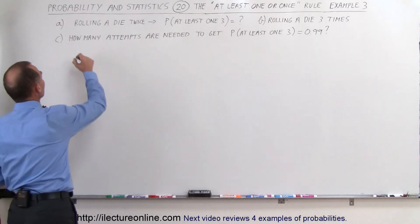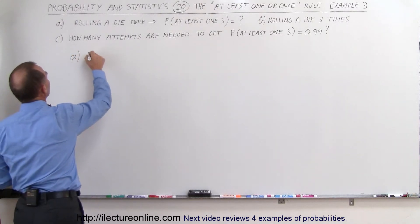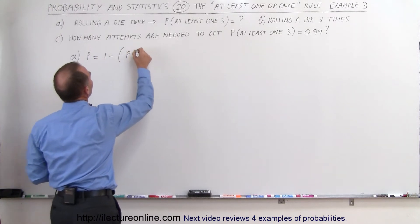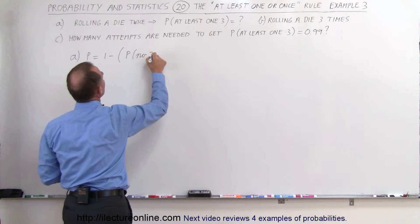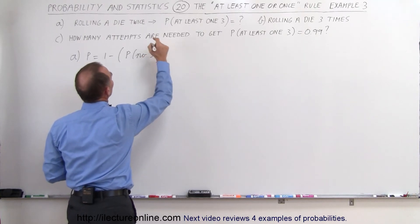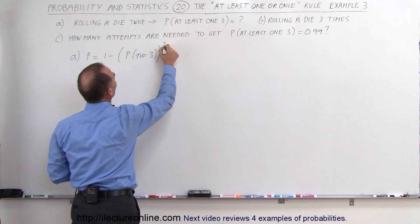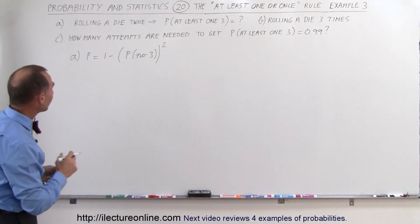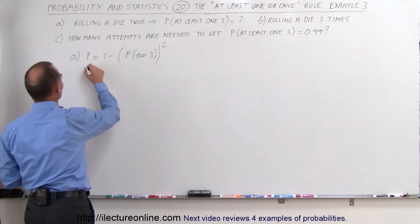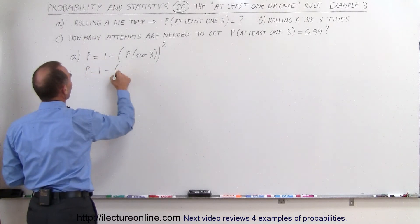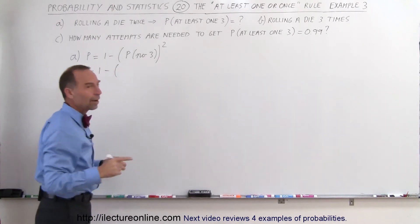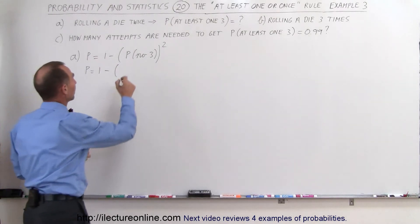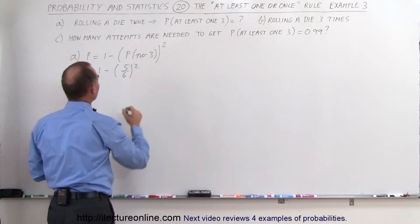Starting out with part A: to find the probability, it is equal to one minus the probability that we'll get no three, raised to the number of turns that we're going to try. That's two tries, so raised to the second power. So that means the probability is equal to one minus the probability of getting no three on any one try, which would be five out of six, raised to the second power.